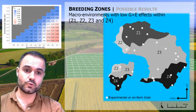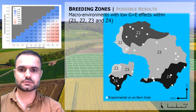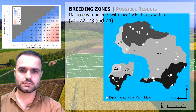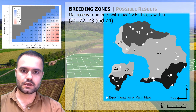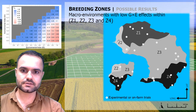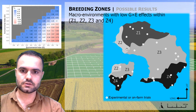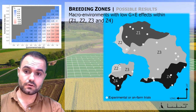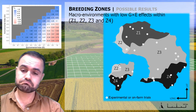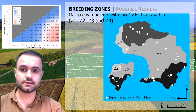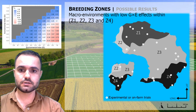These are zones with low genotype-by-environment (G×E) effects within them. We can note that some zones — like zone 2 — have few phenotype data points, and in the next cycle we could think about including more data collection points there.